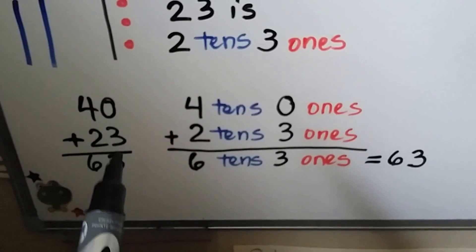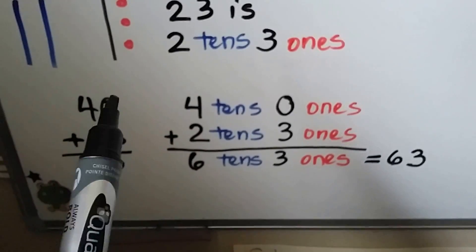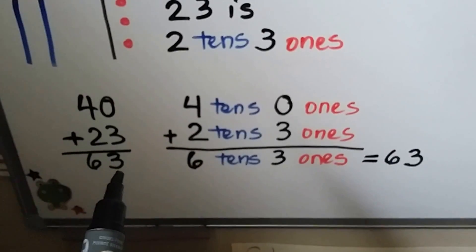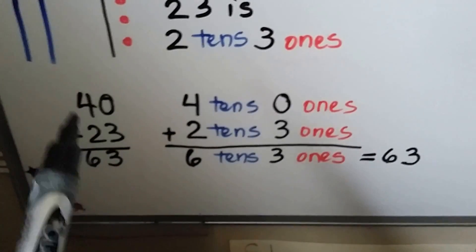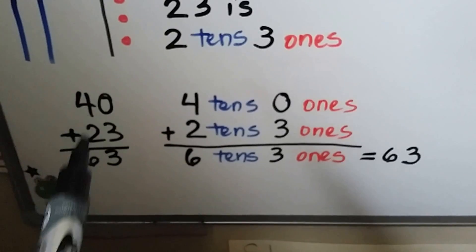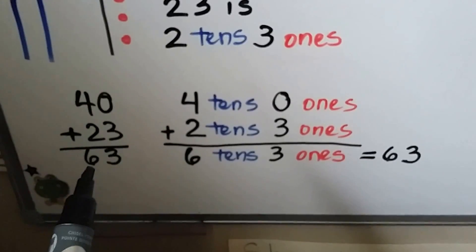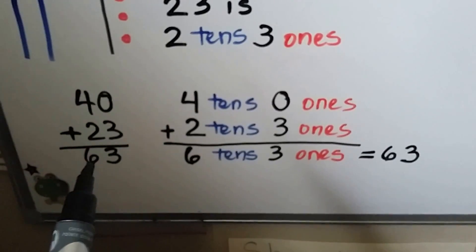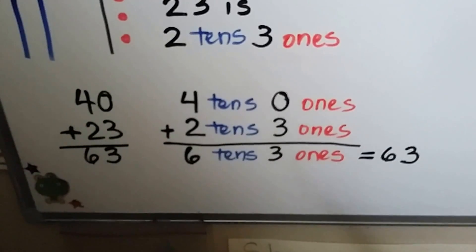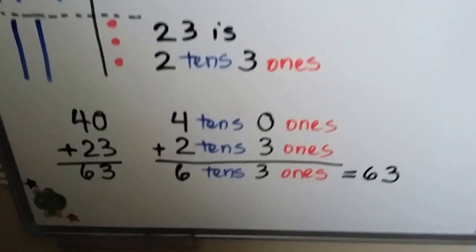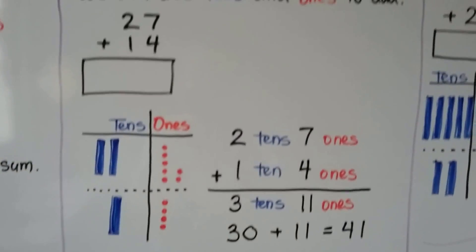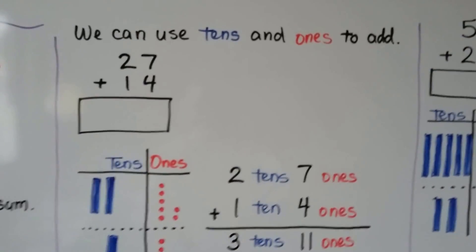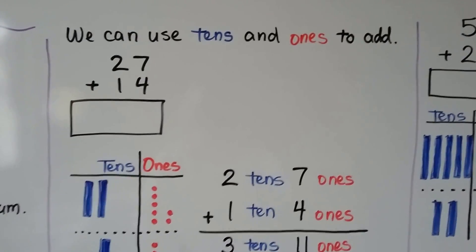We added the 0 and the 3, which equals 3. We added the 4 plus the 2, which is 6. We have 63. We can use tens and ones to add.